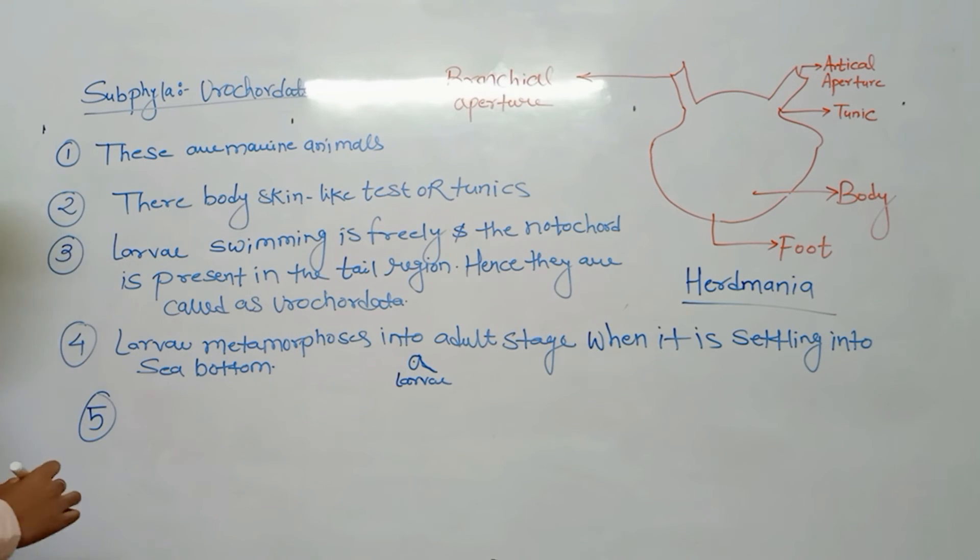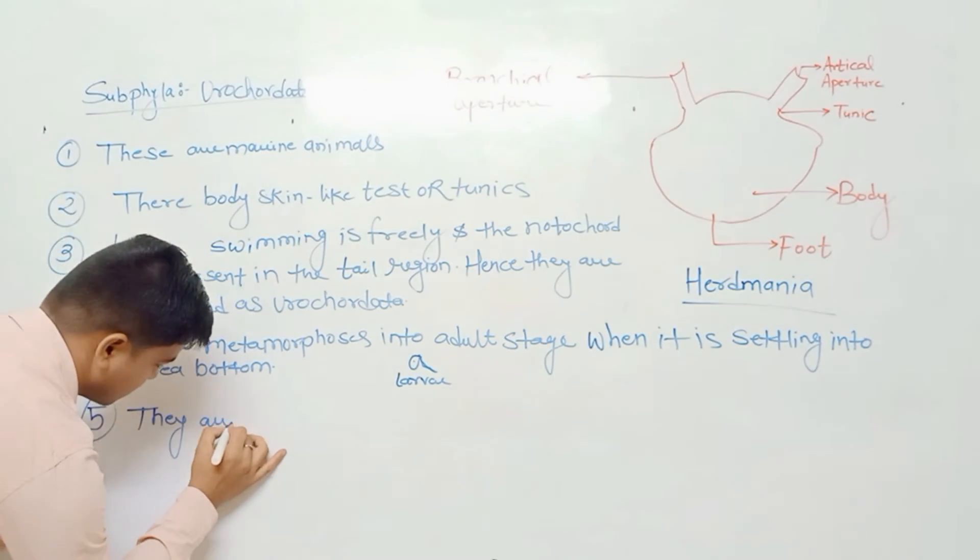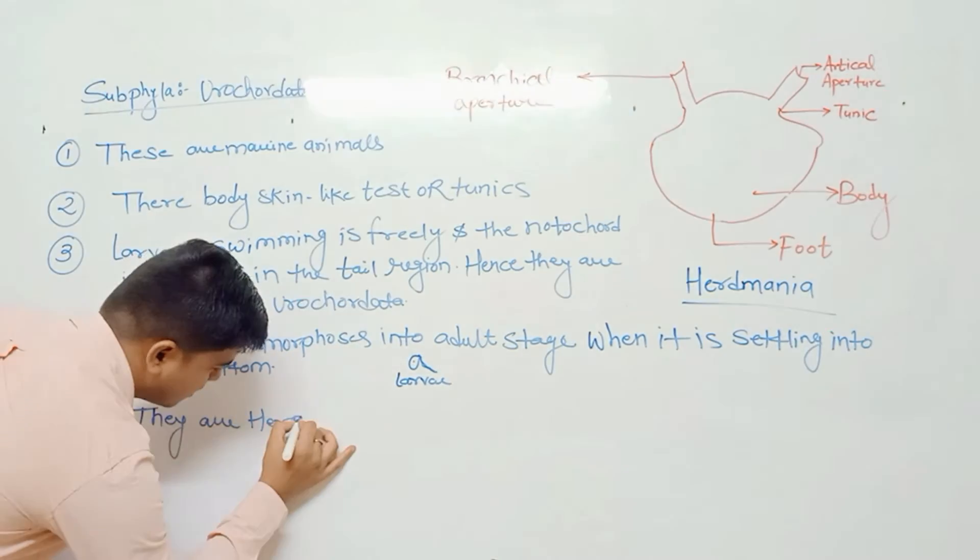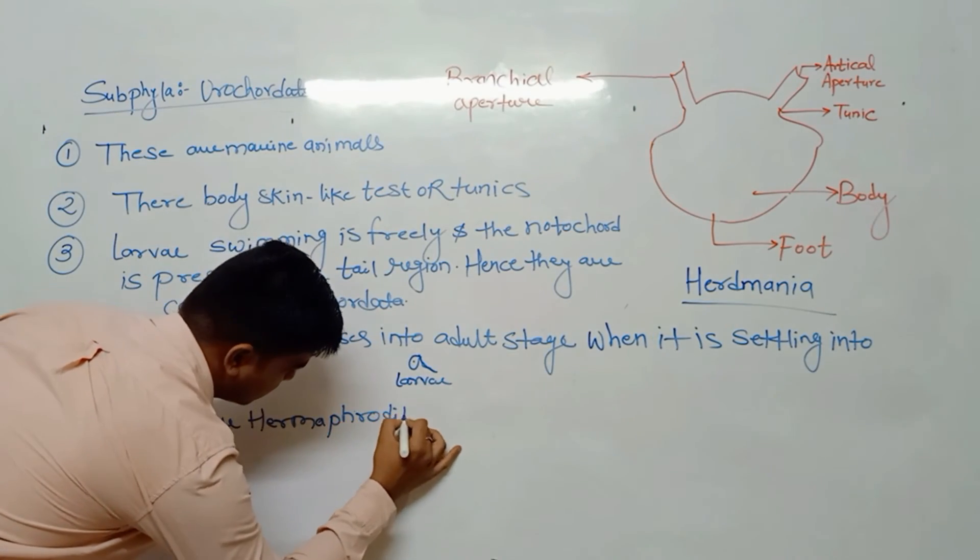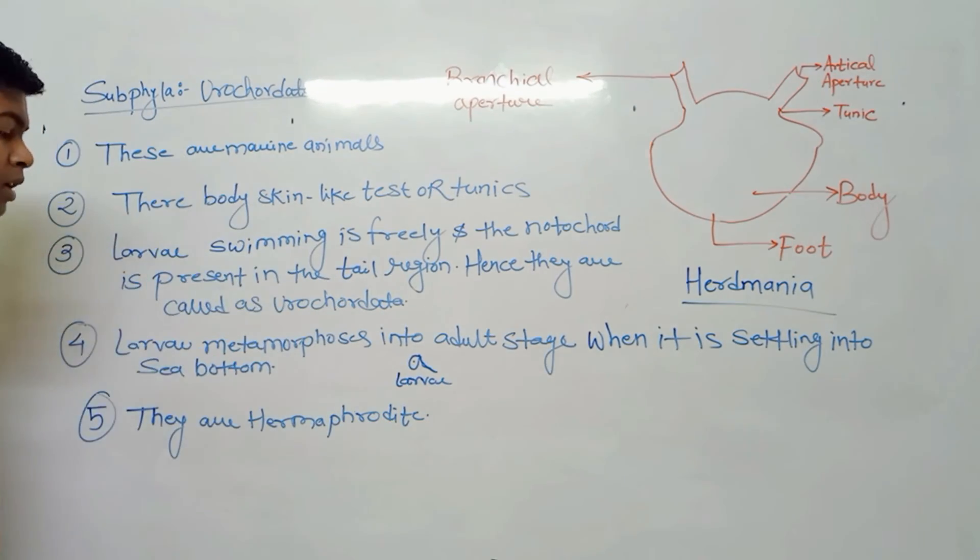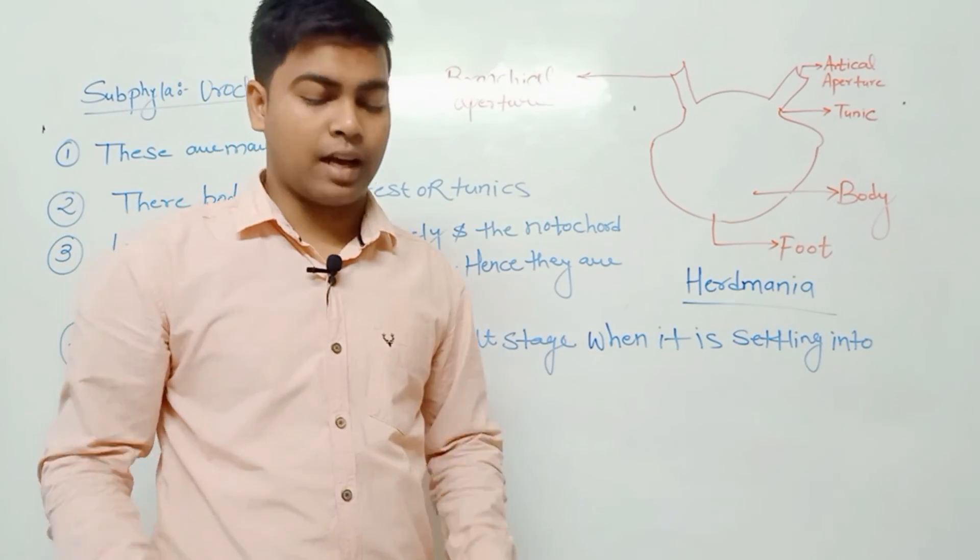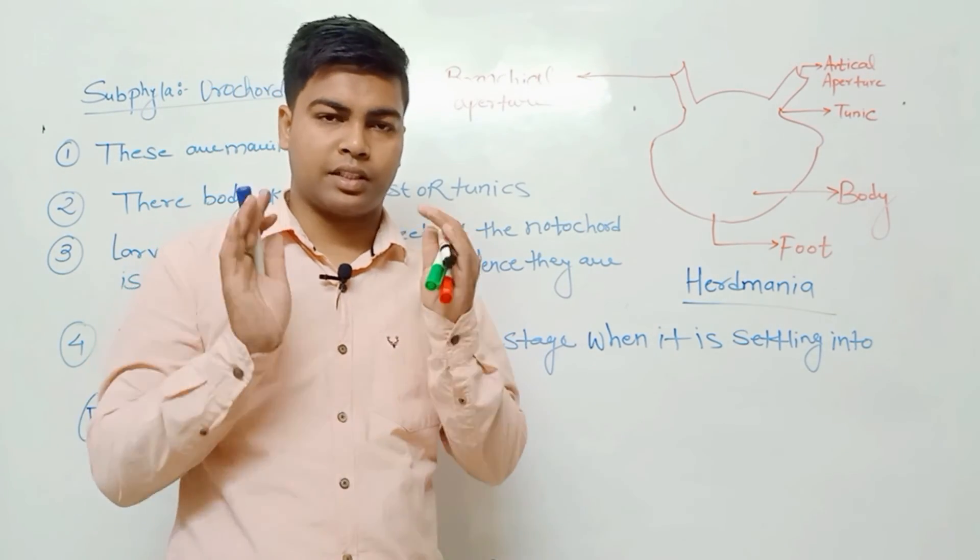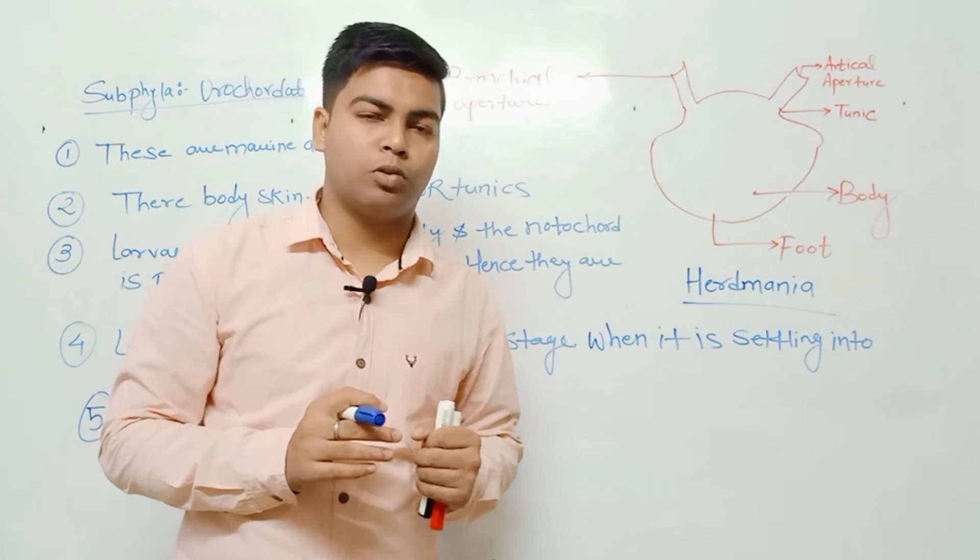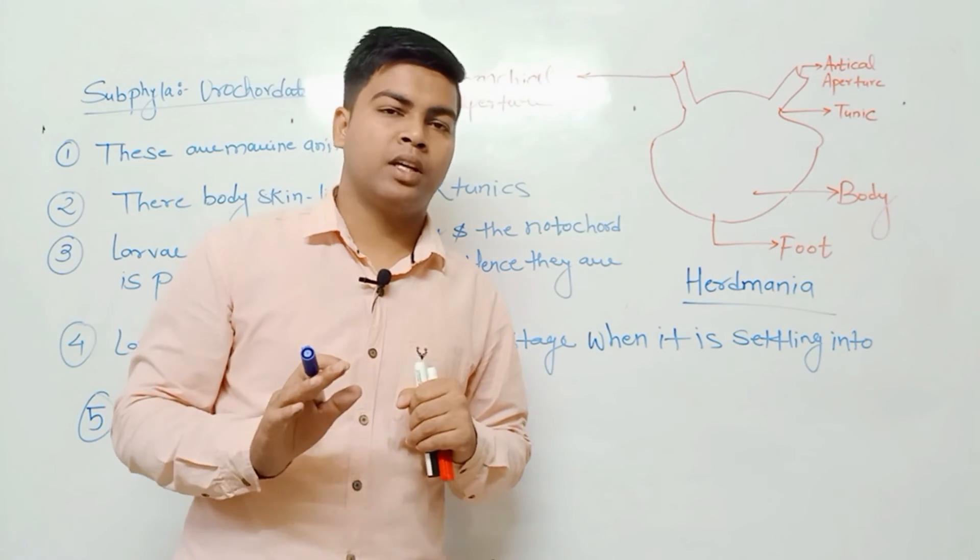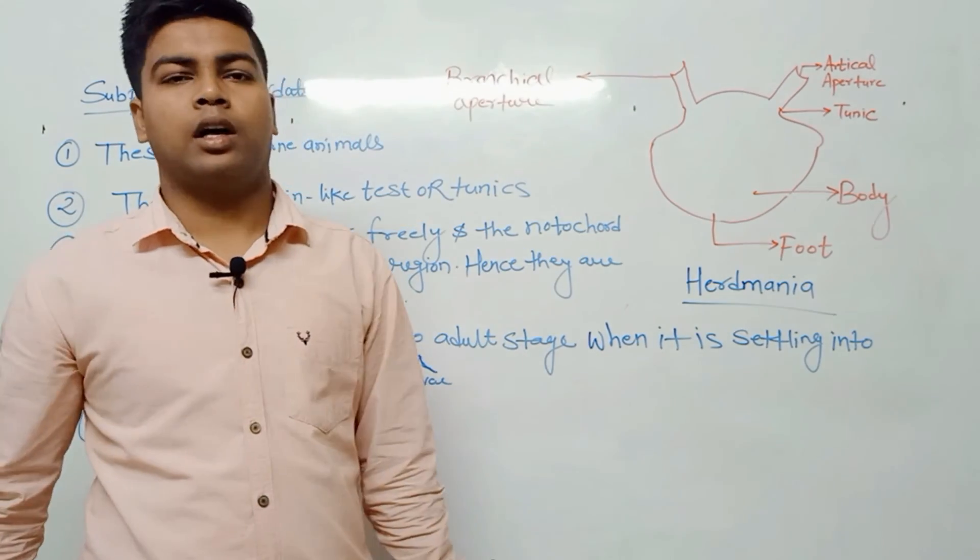Fifth is they are hermaphrodite. What do you mean by that? Sexes are present in the same animal - bisexual. Male gamete and female gamete are present in the same animal, so they are hermaphrodite.